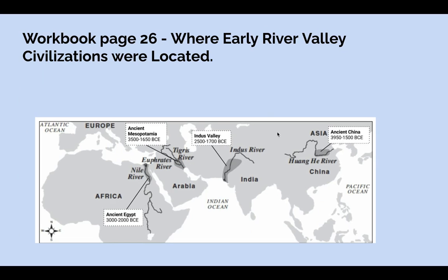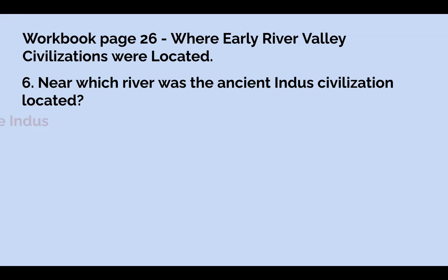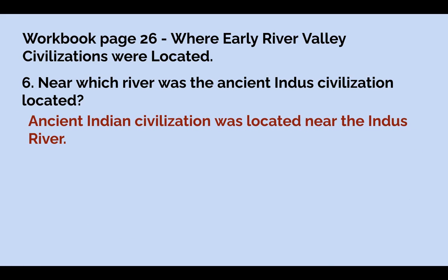Number six: near which river was the ancient Indus civilization located? You're going to find the Indus Valley and answer question six. Ancient Indian civilization was located near the Indus River. The Indus River Valley is where that civilization grew.